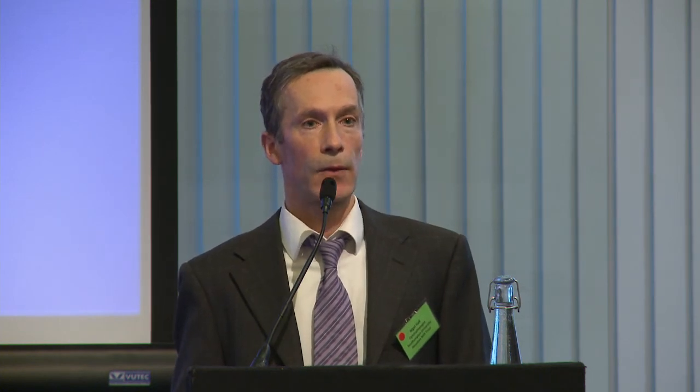To get a full picture of what's going on, we need to know something about peripheral vision — the visual fields. We use a specialised instrument that produces a printout with light areas of grey showing good vision and darker spots showing where vision is impaired.